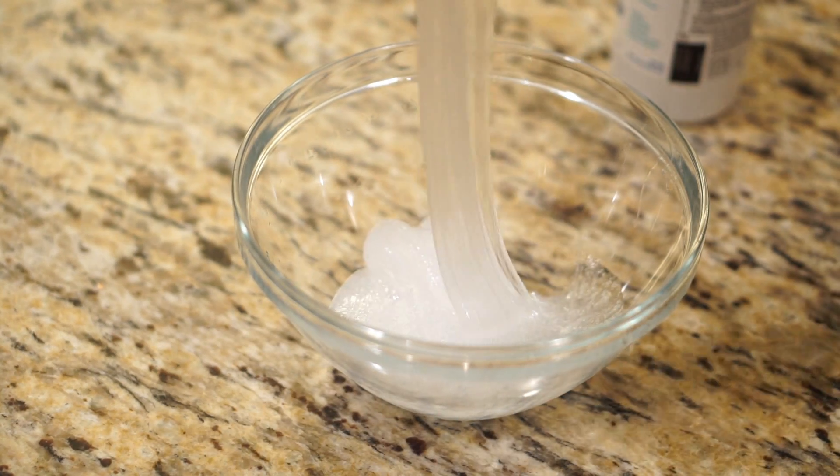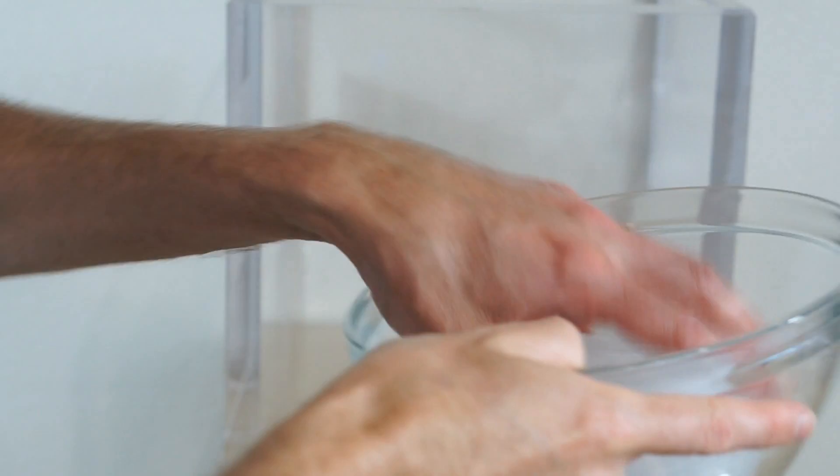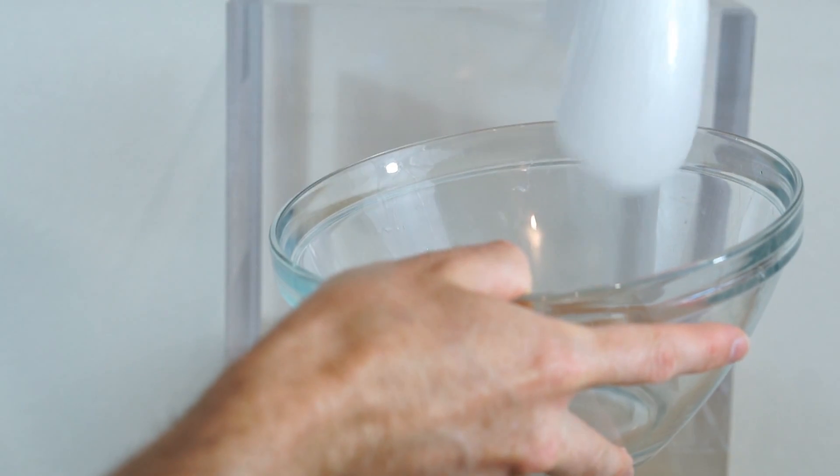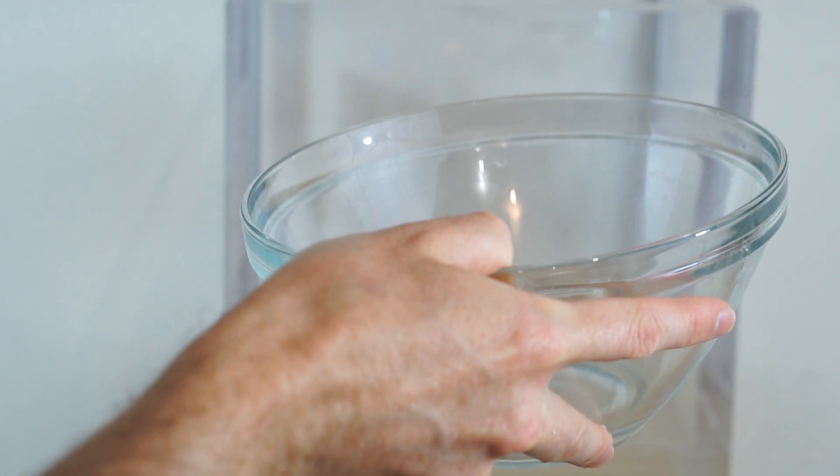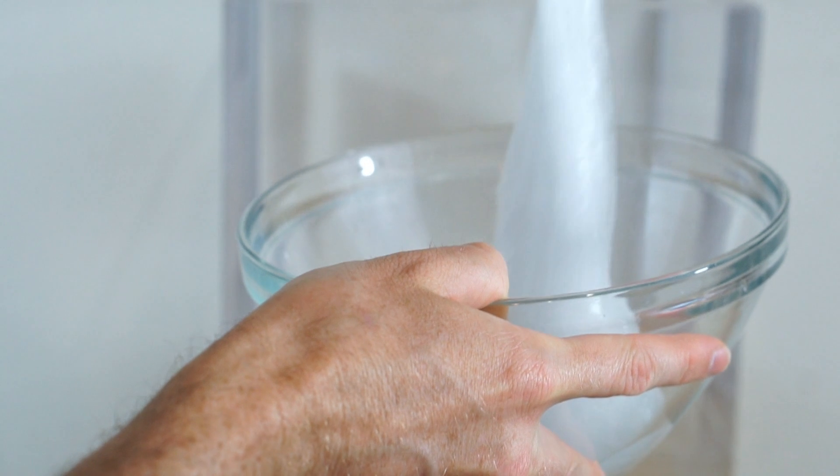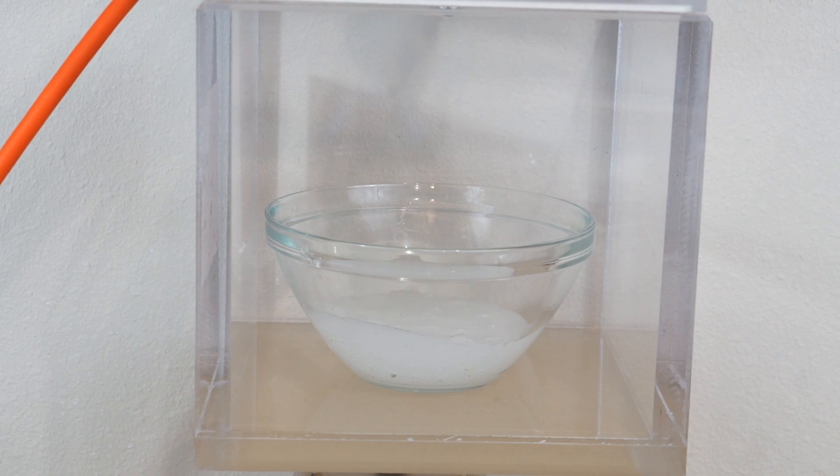Putting it in the vacuum chamber and sucking out all the air bubbles. So now let's go ahead and put it in my vacuum chamber and try to remove all these air bubbles instead of letting it sit for a lot of days. Making instant clear slime in a vacuum chamber. Three, two, one.